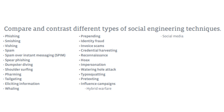Then we have credential harvesting. The attacker sends a hyperlink or attachment leading to a sign-in page associated with a legitimate service the victim is known to use — for example, an Apple account, Google Drive, Office 365, or Dropbox. Once the victim clicks the link and enters their credentials, those credentials are hijacked and compromised. The attacker will likely use the username and password not only in that system but in other systems as well.